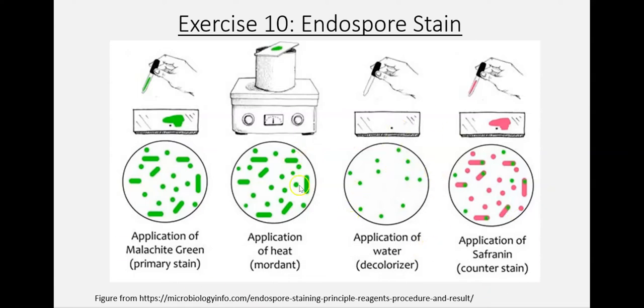That comes out really easily, and then at the end, because the cell bodies are colorless as a result of the decolorizing, we will use another basic dye solution, safranin, to counter stain the cell bodies so that the bodies of the cells are visible and we can also determine whether or not the spores are inside or outside of the cells.